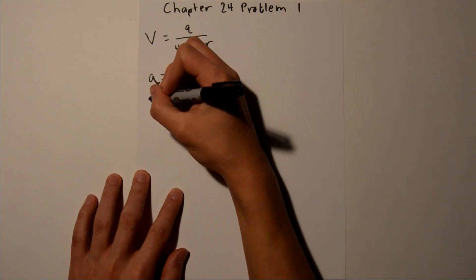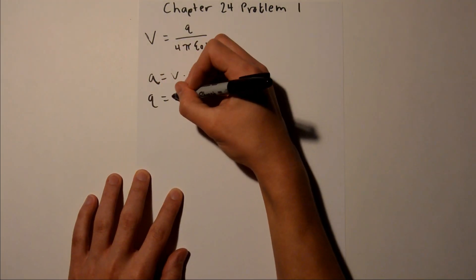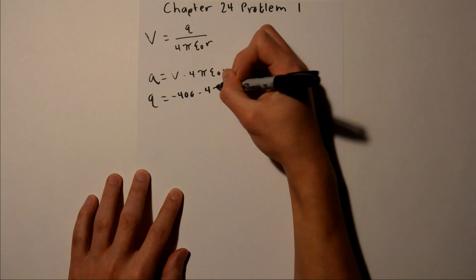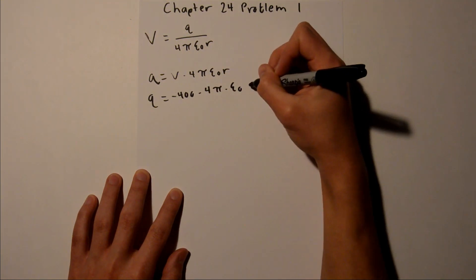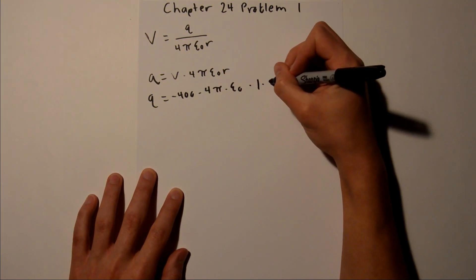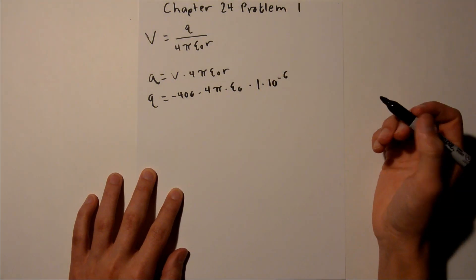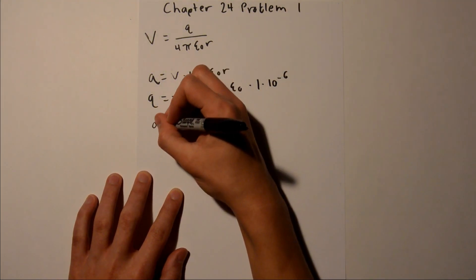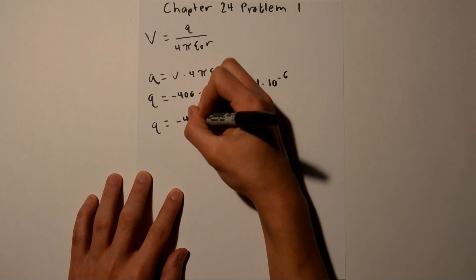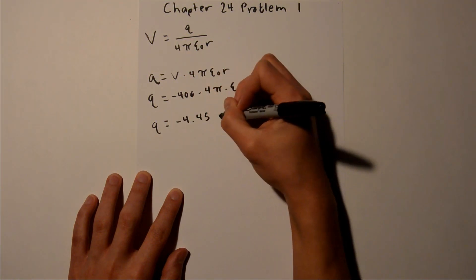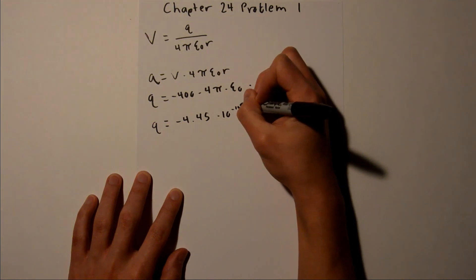and we have all those values, so we can plug them in: negative 400 times 4π times ε₀, and our radius is 1 times 10 to the negative 6. And when you plug that into your calculator, you should get a charge of negative 4.45 times 10 to the negative 14 coulombs.